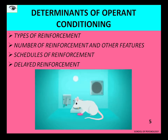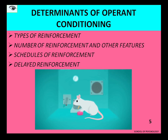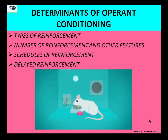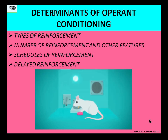Intermittent, or partial reinforcement, means that sometimes the rat will be reinforced and sometimes it will not. In partial schedules, we only reinforce the desired behavior occasionally rather than all the time. Unlike continuous reinforcement where every lever press is rewarded, in partial reinforcement the rat is only occasionally rewarded.